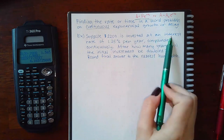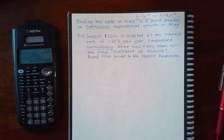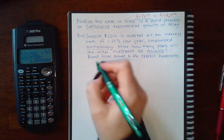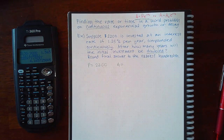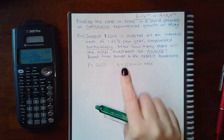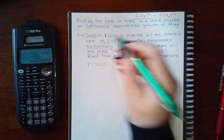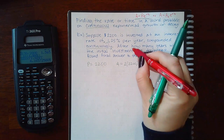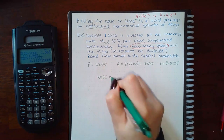The problem says: suppose $2,200 is invested at an interest rate of 1.25% per year compounded continuously — after how many years will the initial investment be doubled? Round to the nearest hundredth. I know the initial amount is 2200. It doesn't give me the dollar amount afterward — it just tells me it's doubled, so that is 2 × 2200 = 4400. My rate is 0.0125, and t is the unknown.